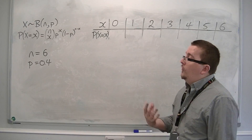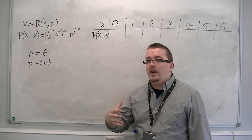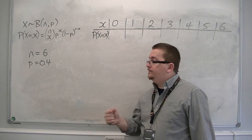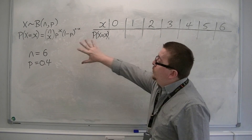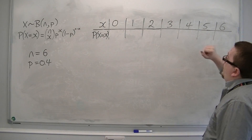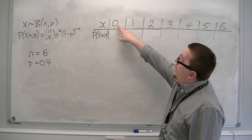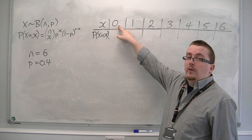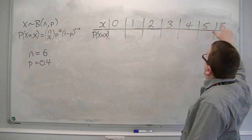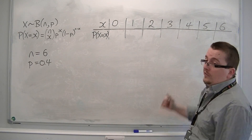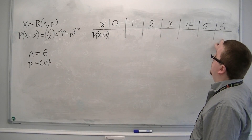The probability of getting less than 3, for example, or the probability of getting greater than 4. What we could do is build up a table of values for each probability — so 0 successes, 1 success, 2 successes, all the way up to 6 possible successes, and each of these would be the probability of each of those occurring.